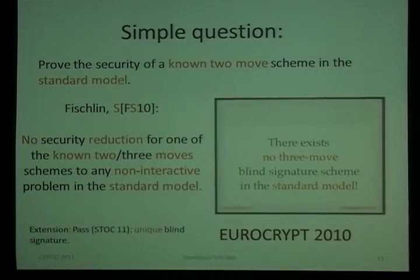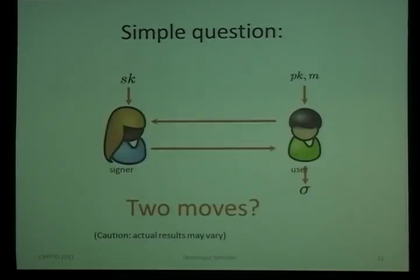We defined a very general class of schemes where all known schemes fall into, and showed that with black-box techniques you won't be able to reduce them to a non-interactive assumption. This result was extended by Pass also to unique blind signatures. The simple question remains: what about two moves in the standard model?